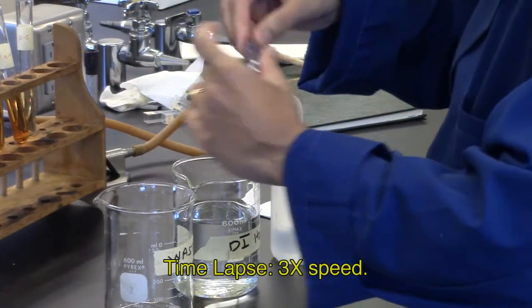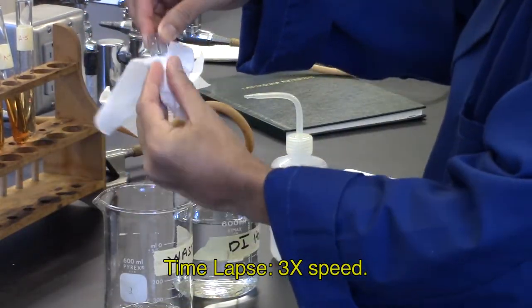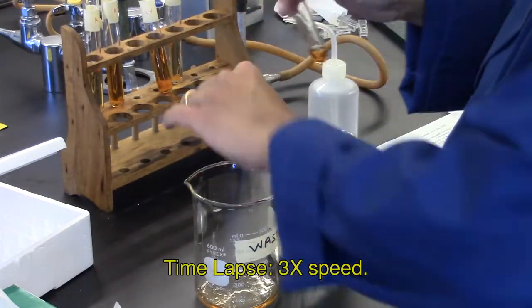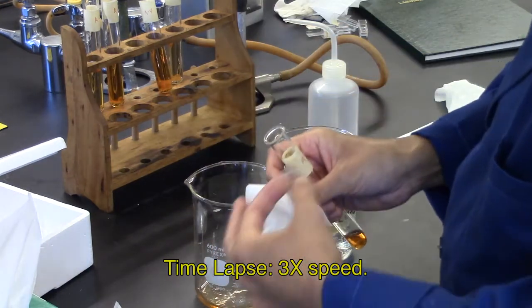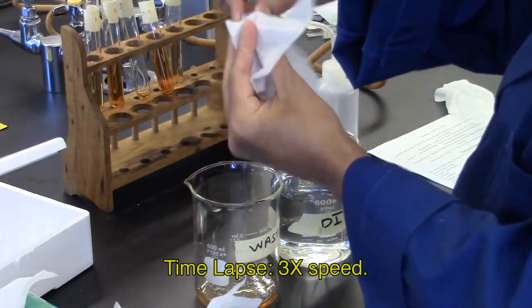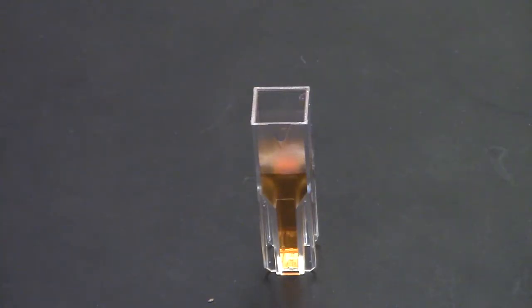Fill one cuvette with distilled water for the calibration. Rinse a cuvette three times with the sample A3. Use the waste beaker. When you are actually measuring, the cuvette needs to be filled to a little over halfway.